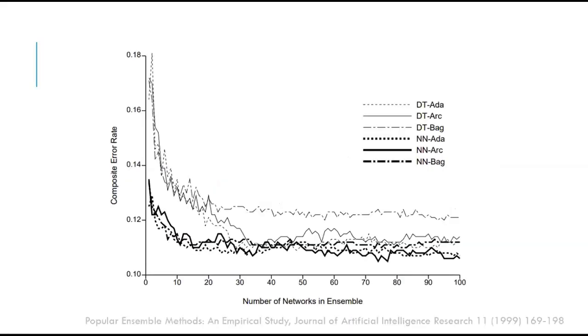Here you can see, on 23 different data sets, the performance of different ensemble methods is averaged. So AdaBoost, decision tree, arcing decision tree, decision trees with bagging are compared with neural network AdaBoost, neural network arcing, and neural network bagging.